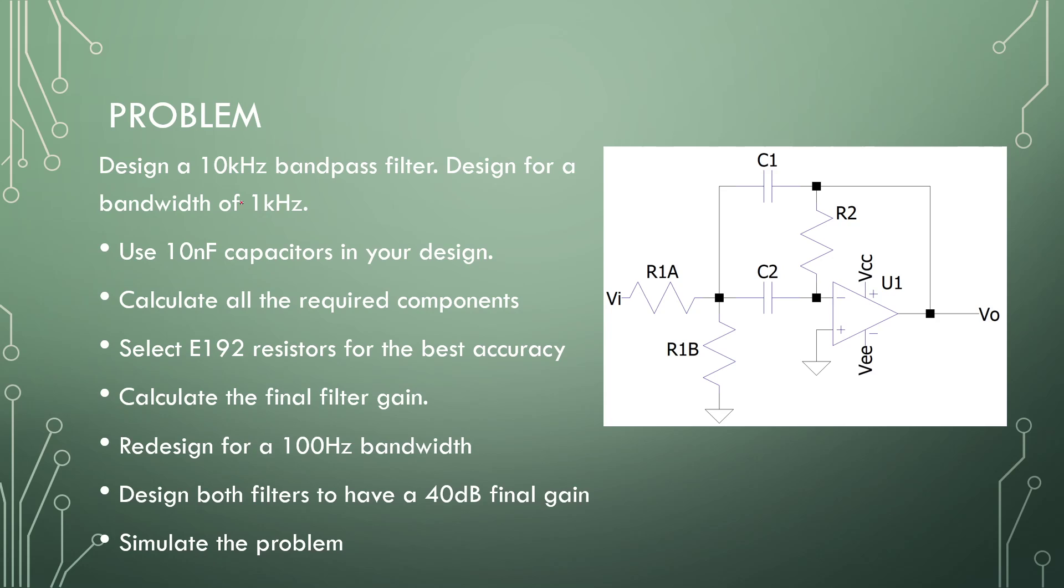The first problem: design a 10 kHz bandpass filter with a 1 kHz bandwidth. In the previous video we did a KRC, so in the end we will compare this filter to the KRC design. Use 10 nF capacitors, calculate all the components using E192 resistor values, and we need the final gain. Then, redesign for 100 Hz bandwidth.